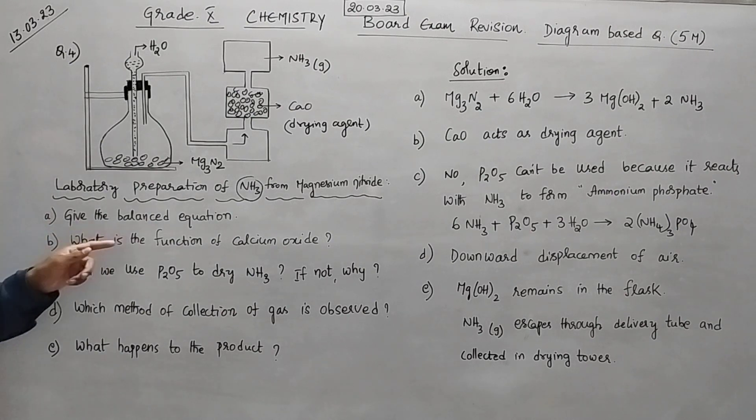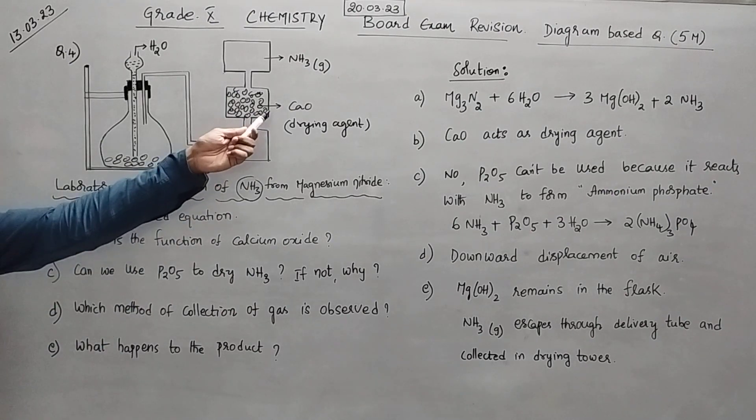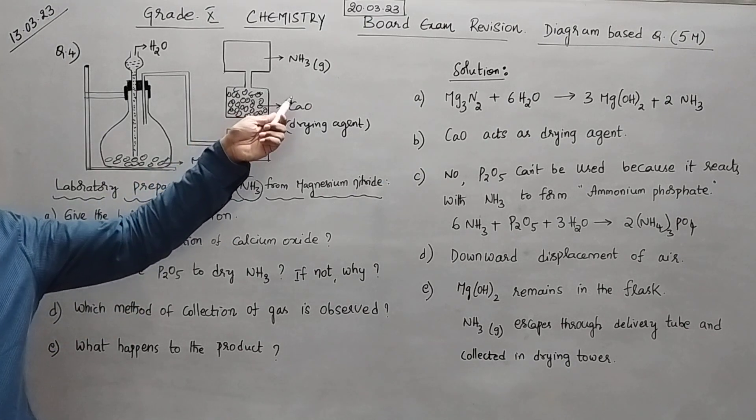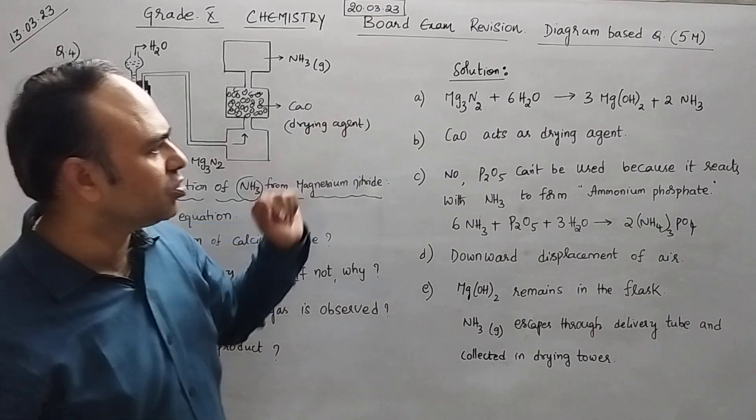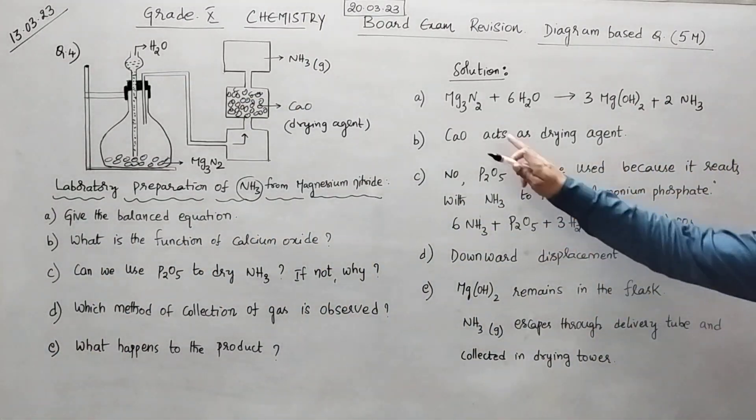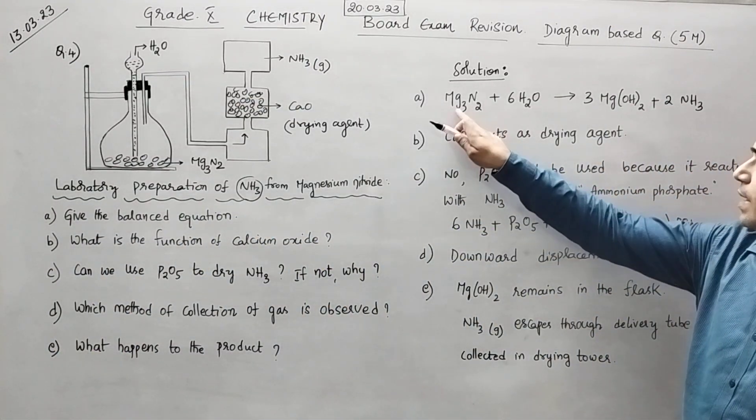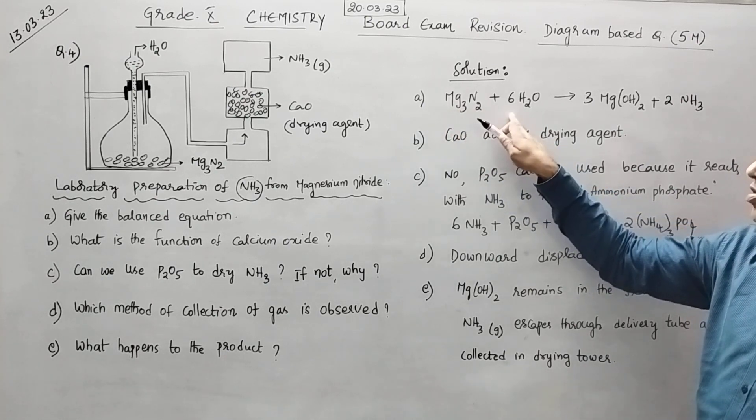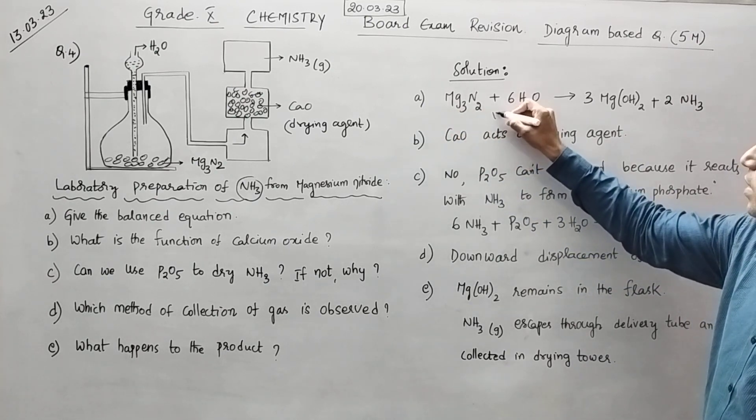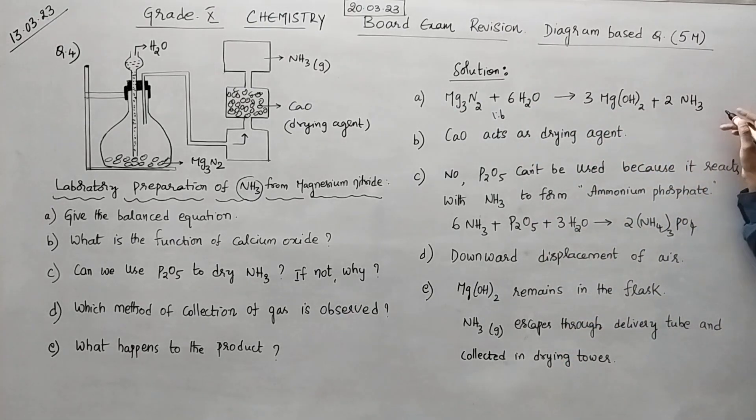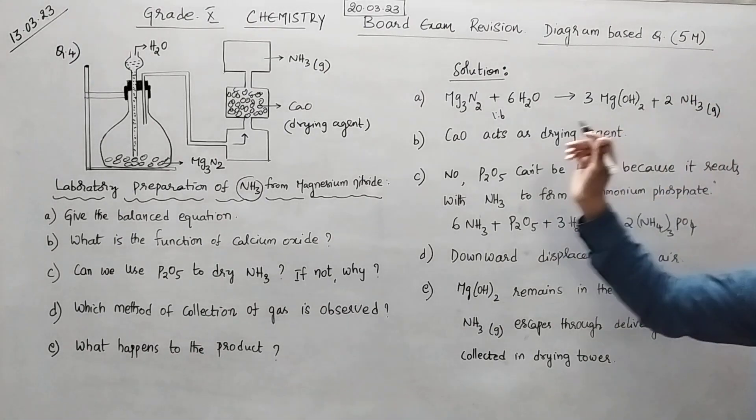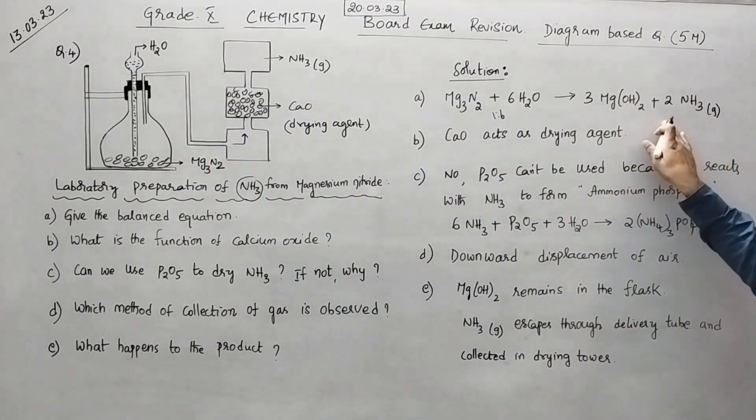Now the questions are give balanced equation. What is the role of calcium oxide. Can we use P2O5 here instead of CaO. Next which method of collection of gas is observed. And finally what will happen to the products here. Now I have written the solutions. First one. Magnesium nitride. Mg3N2 and water in the ratio of 1 is to 6. And the product obtained is magnesium hydroxide and ammonia gas. So this ammonia gas will escape through this delivery tube.